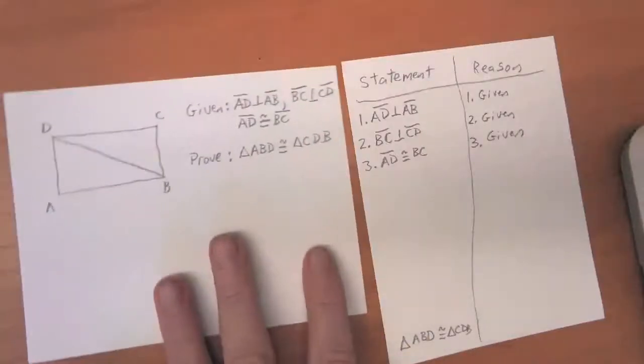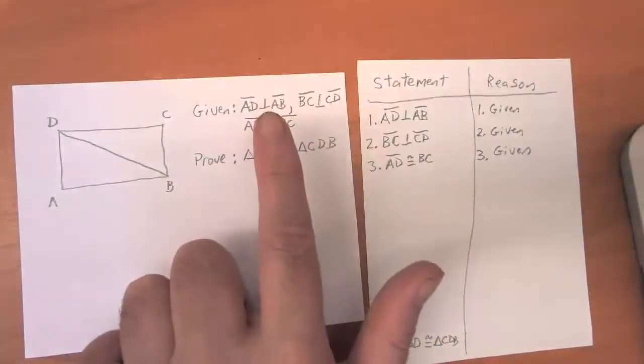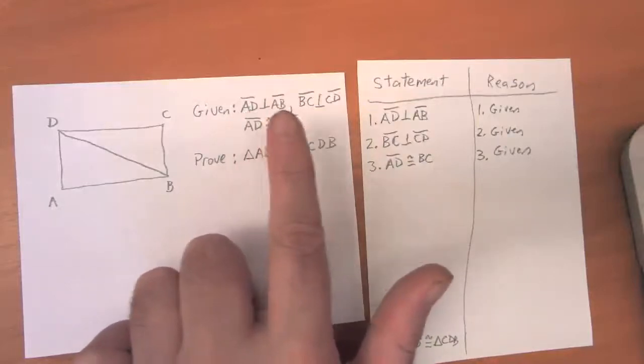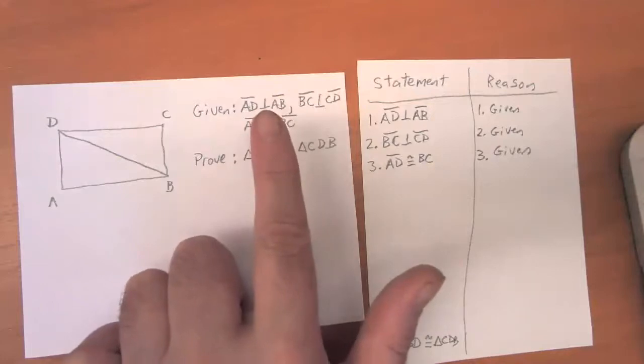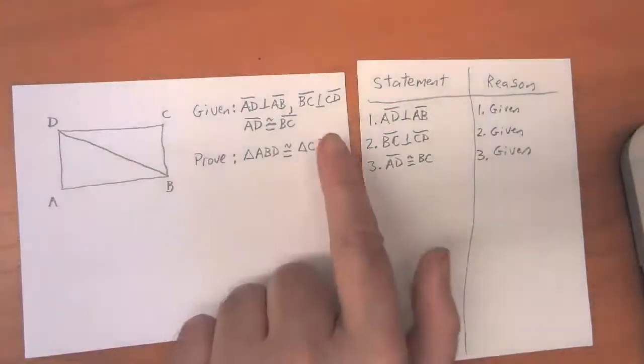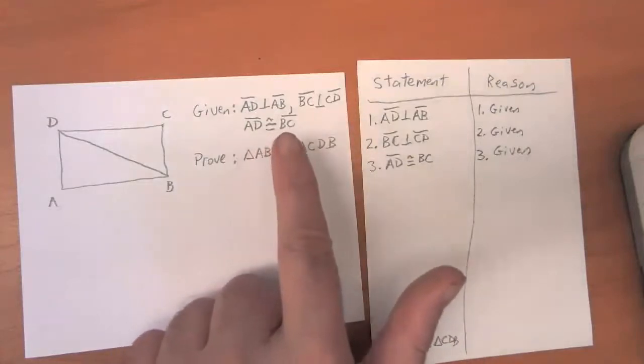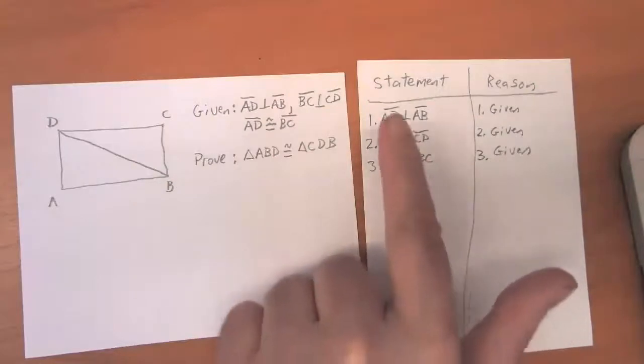Let's take a look at a proof. In this diagram I've got this quadrilateral, which is a four-sided polygon. I'm given that AD is perpendicular to AB - that symbol there means that these two line segments form right angles where they meet. So that symbol should make you think a little bit about a corner. We know that BC is perpendicular to CD and that AD is congruent to BC.